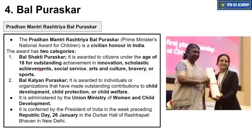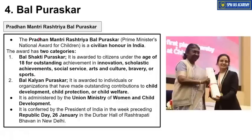Bal Shakti Puraskar is given to children under the age of 18 for outstanding achievement in the fields of innovation, scholastic achievement, social service, art and culture, bravery, and sports. Doosri category, Bal Kalyan Puraskar, is awarded to individuals or organizations who have made outstanding contribution to child development, child protection, or child welfare. Dhyan dijiyega: Bal Shakti Puraskar bacchon ko diya jata hai jo alag-alag fields mein achha perform karte hain, jabki Bal Kalyan Puraskar unhe diya jata hai jo bacchon ke welfare ke liye kuch achha contribution karte hain. These awards are administered by the Union Ministry of Women and Child Development.